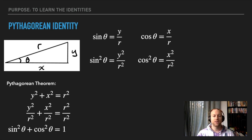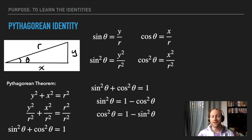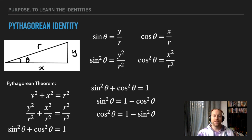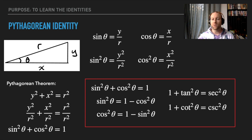So I end up with the identity: sine squared theta plus cosine squared theta equals one. This is one of the key identities we'll use to solve equations. With a little algebra, I can rearrange it — for example, subtracting cosine squared or sine squared to the other side. And if I divide all terms by either cosine squared theta or sine squared theta, I get two more identities. You don't need to know where those come from — just know that these are the identities.